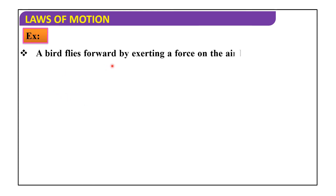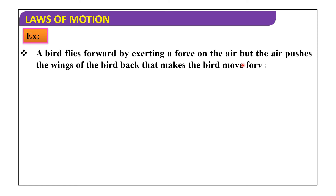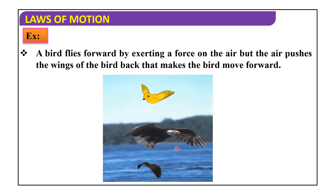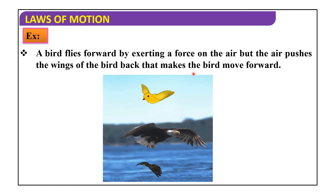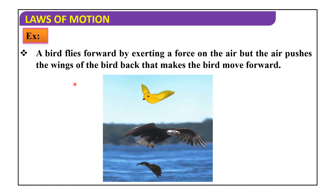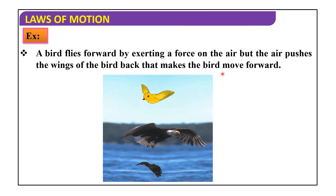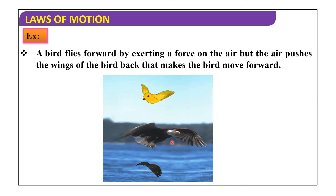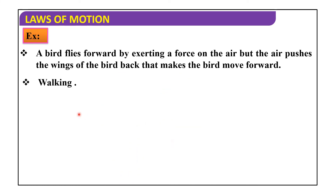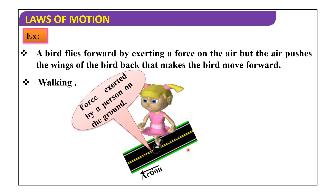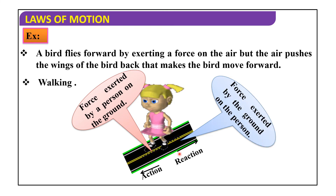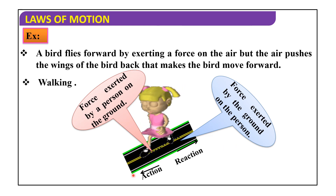A bird flies forward by exerting a force on the air, but the air pushes the wings of the bird back, and that makes the bird move forward. See the picture. Similarly, when a person is walking, the force exerted by the person on the ground and the force exerted by the ground on the person are both action and reaction.